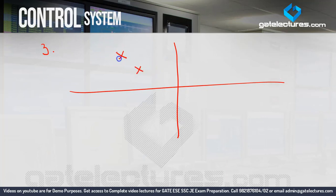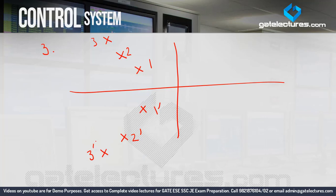In question 3, again three underdamped systems are given with complex pole pairs: 1, 1-dash, 2, 2-dash, 3, 3-dash. This time, all three poles lie on the same line from the origin. This means that when you connect them to the origin and measure the angle from the real axis, phi is the same for all. So phi 3 equals phi 2 equals phi 1.